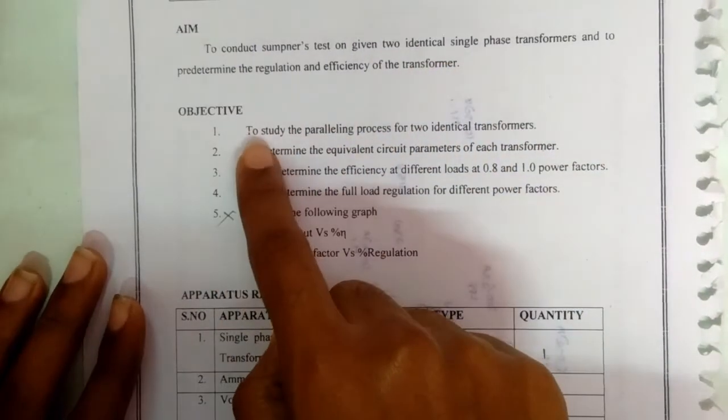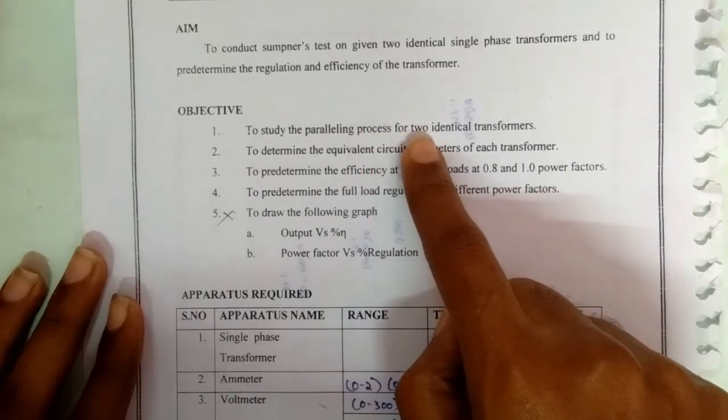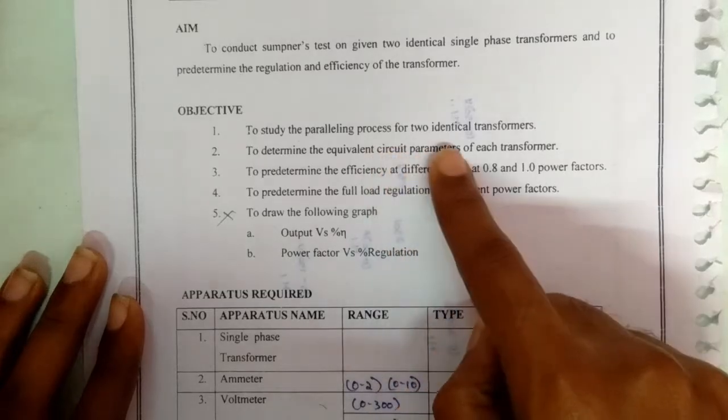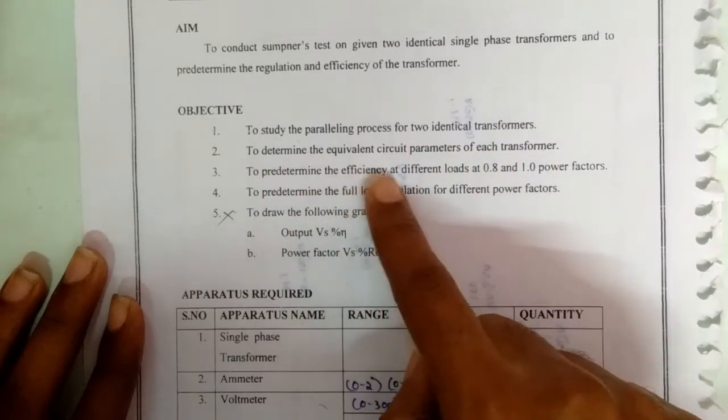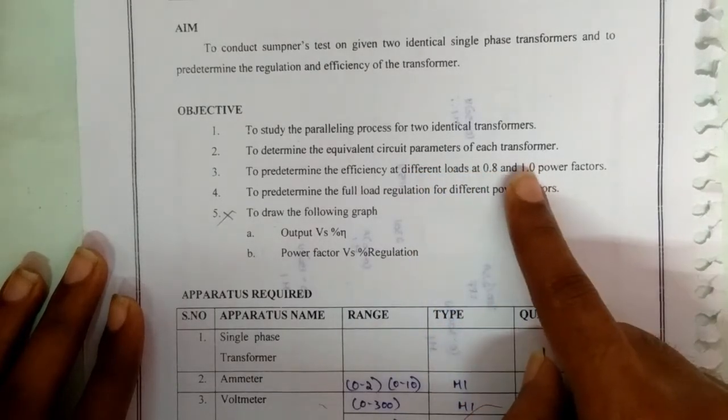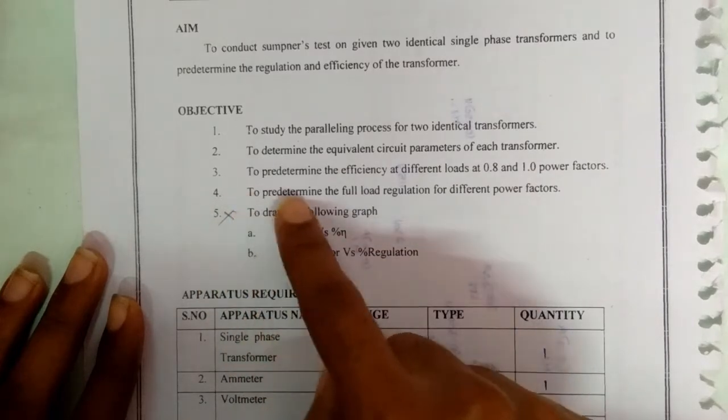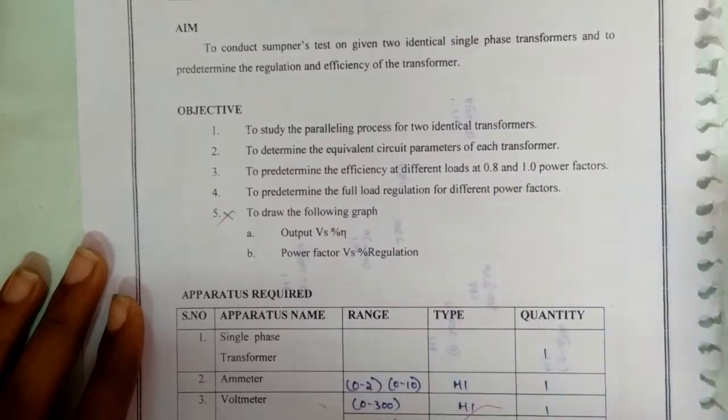To study the paralleling process for two identical transformers, to determine the equivalent circuit parameters of each transformer, to predetermine the efficiency at different loads at 0.8 and 1.0 power factors, and finally to determine the full load regulation for different power factors.